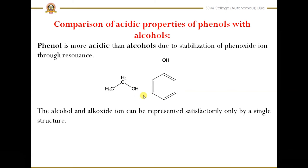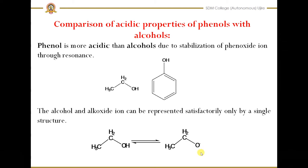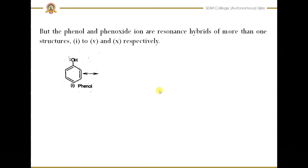In the case of alcohols, the alkoxide ion formed has the formula CH₃CH₂O⁻. The negative charge remains on the oxygen only, so we cannot get more resonance structures for alcohols — we can write only one single structure. But in the case of phenols, for the phenoxide ion we can write more resonance structures, as you can see in the slides.